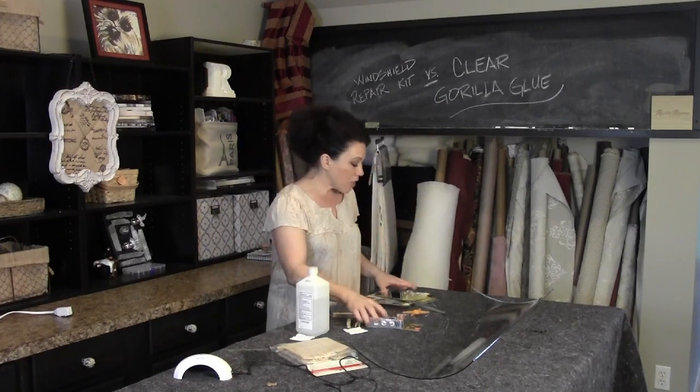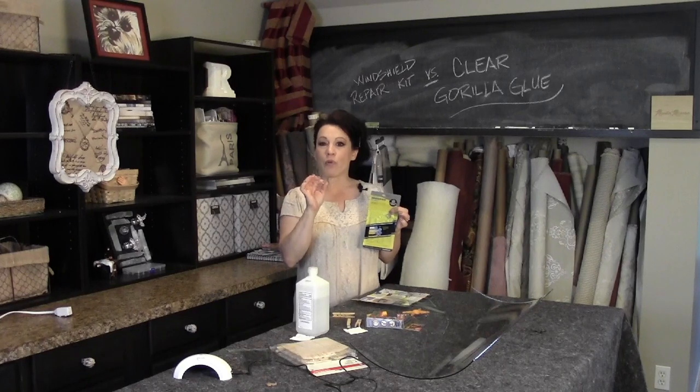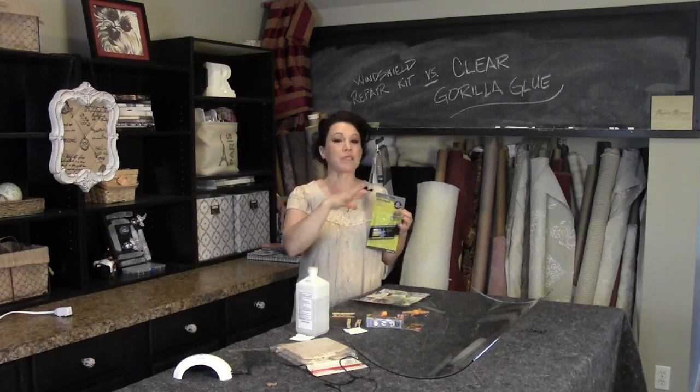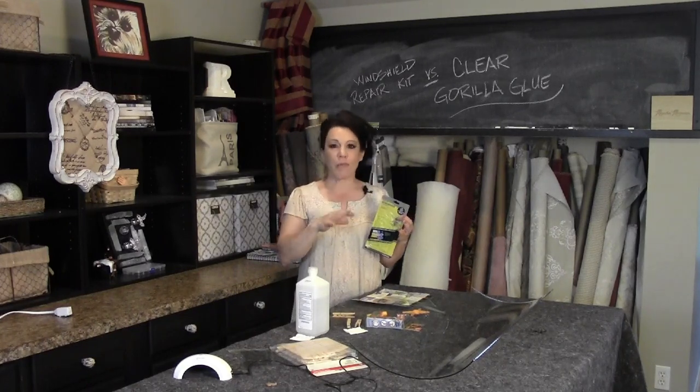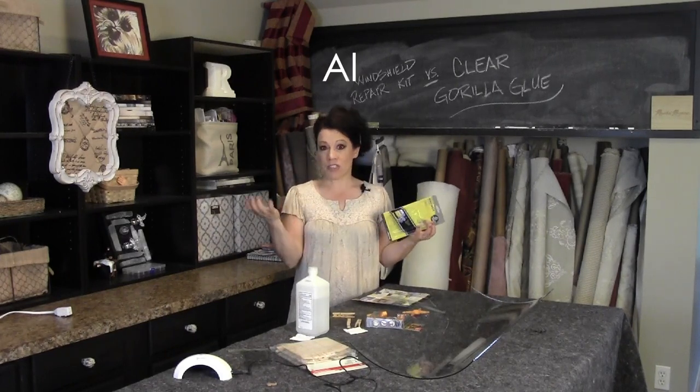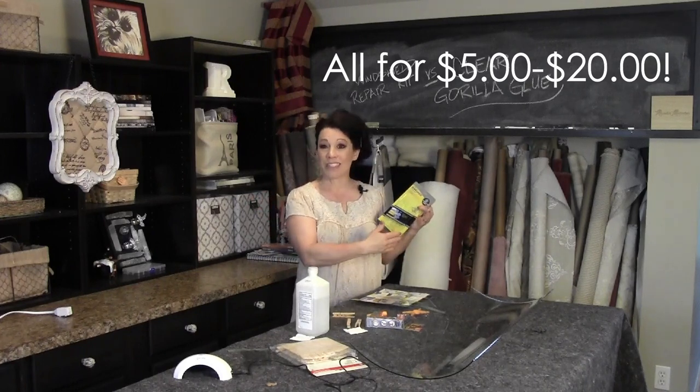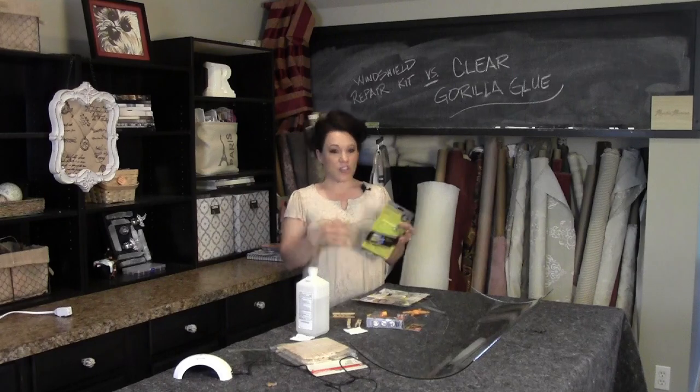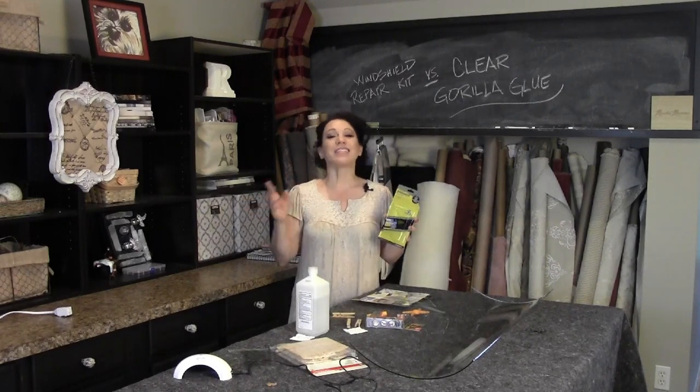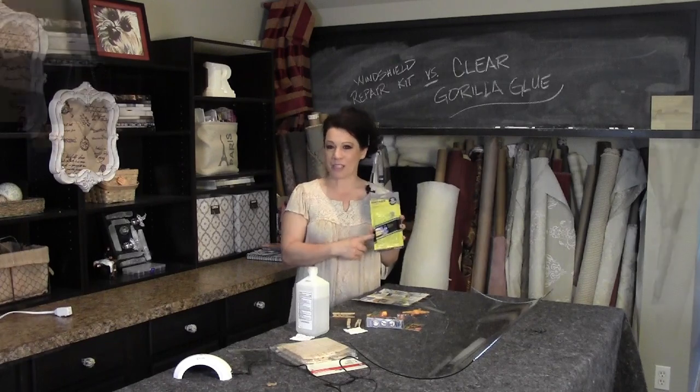The other product I'm using is a do-it-yourself windshield repair kit. Now this is a resin. This is what is used to repair windshield cracks or chips and really it does a great job if you've ever had this done of hiding that crack. So we're going to try this as well and just see which one works better. Whichever one works better we're going to apply onto the piece that I need repaired and get this job done. And I'll have links in the commentary below the video on my website in case you need these products for yourself.